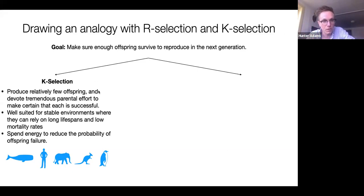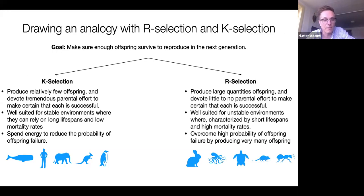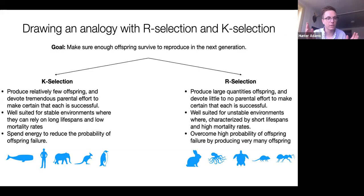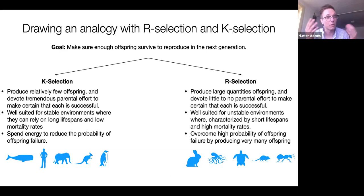The other solution, employed by rabbits, octopus, and sea turtles, is R-selection: produce huge amounts of offspring and devote almost no energy to any of them, relying on probability to guarantee that some number will survive. A sea turtle laying a thousand eggs knows that a very small number will survive to adulthood, but that's okay because she'll have many thousands of offspring — enough that the critical number will be maintained.